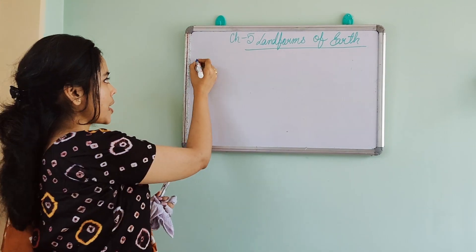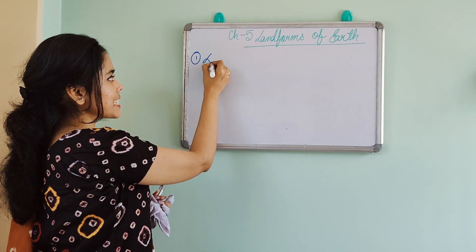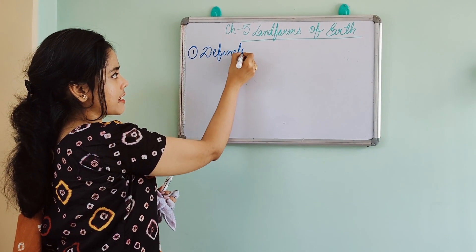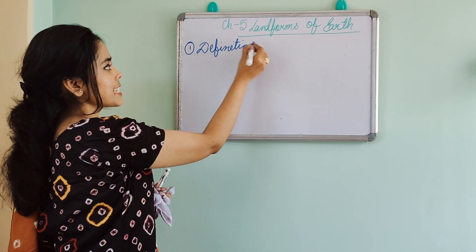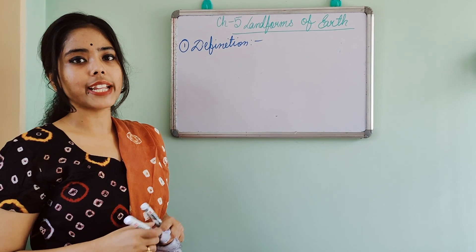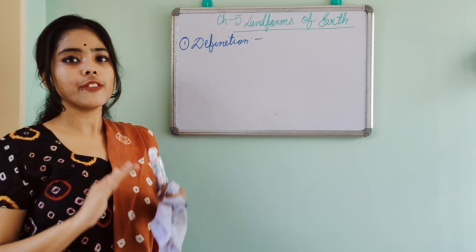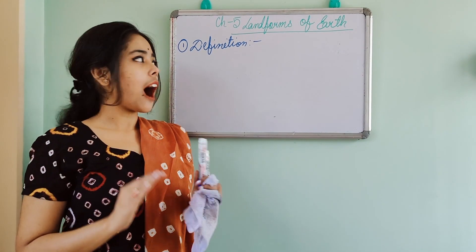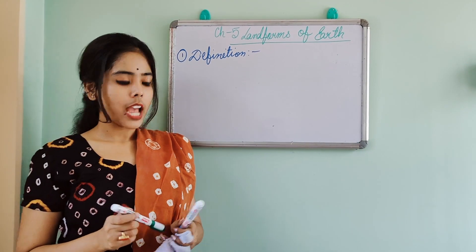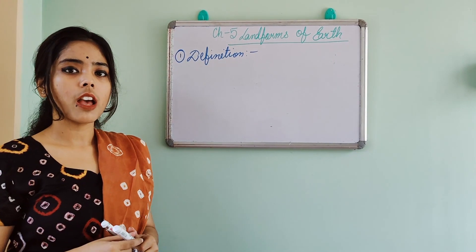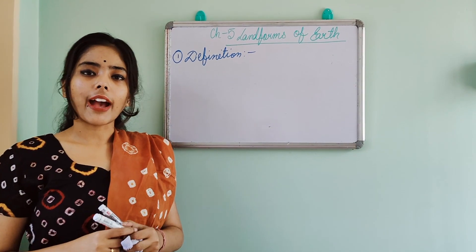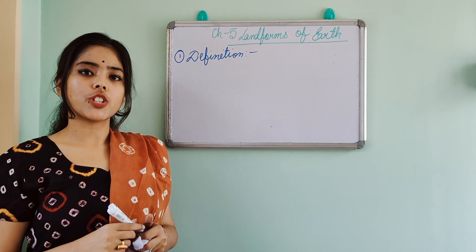The first question is: what is the definition of a landform? Landforms are generally the natural features that are located on the surface of the earth. Now, how many landforms are there? On our earth's surface, you can find three major landforms.